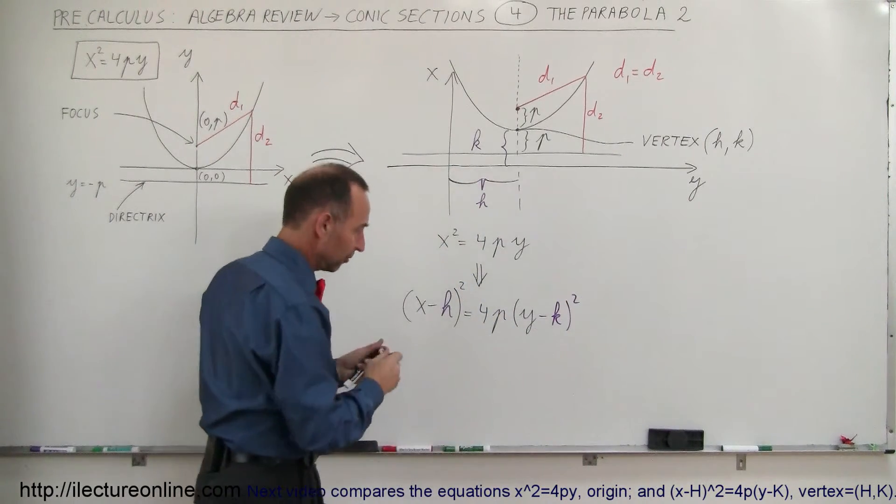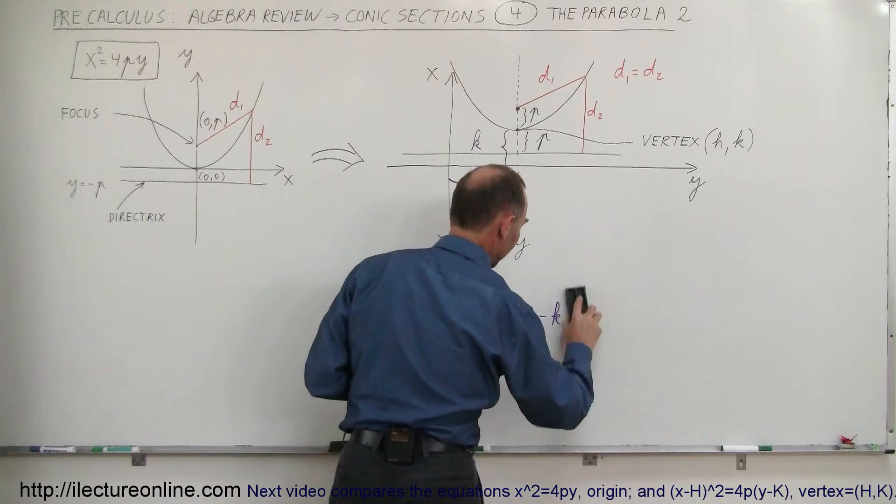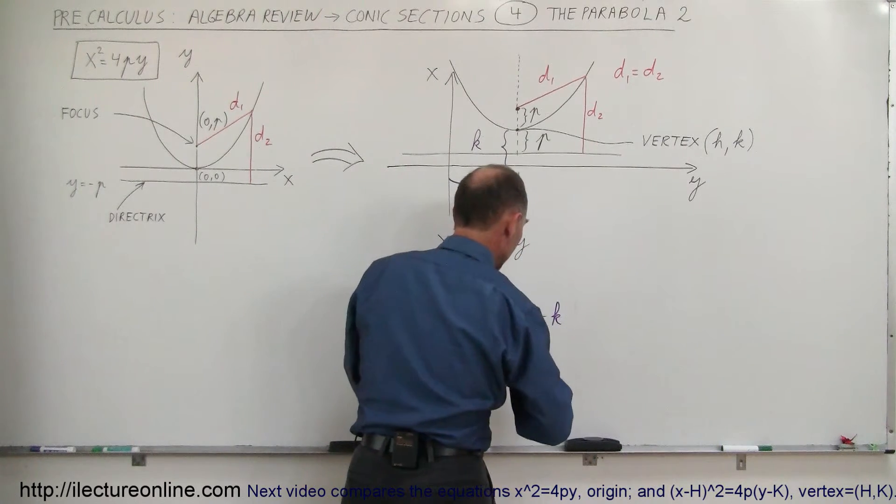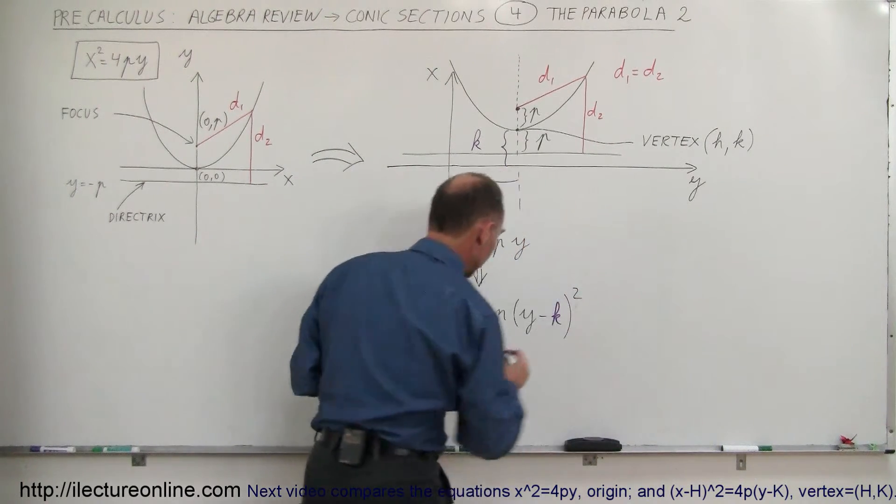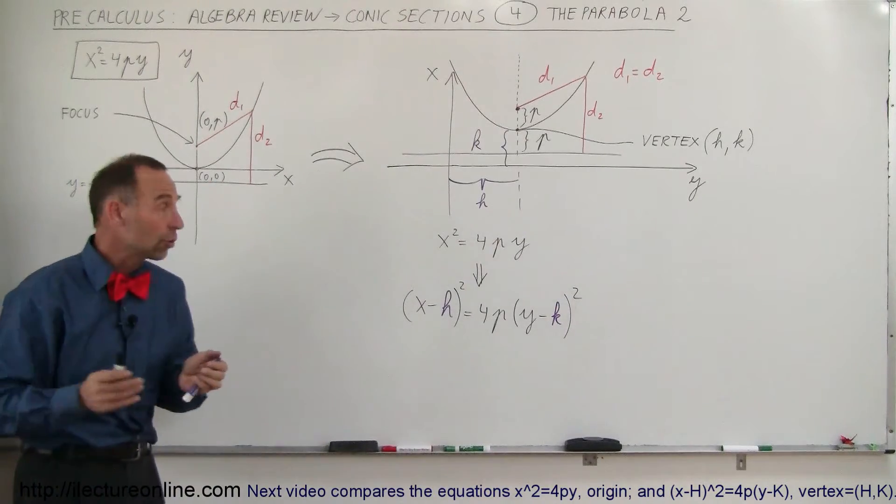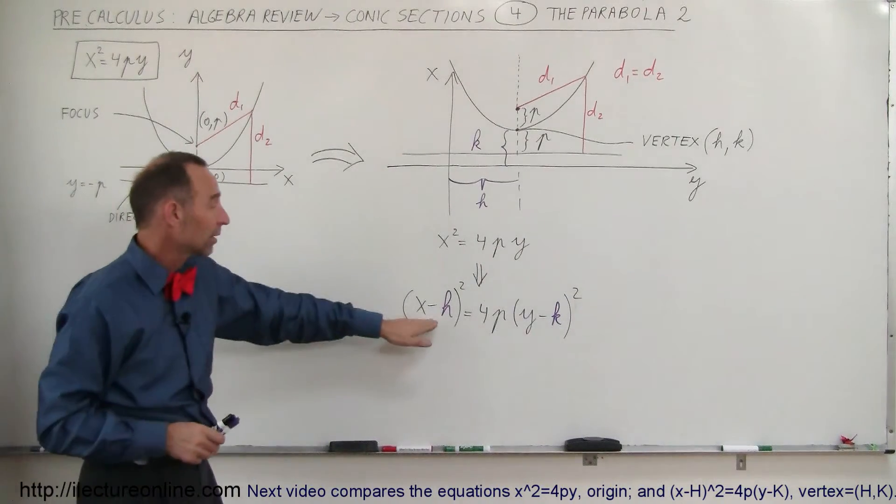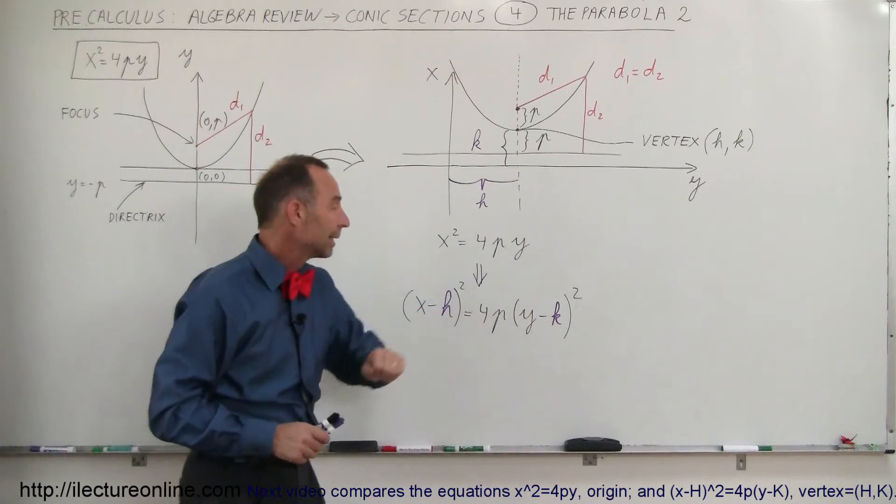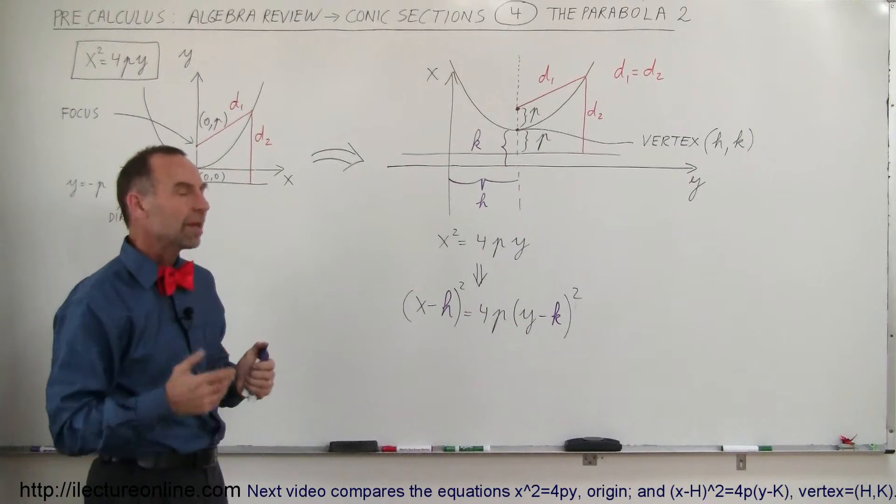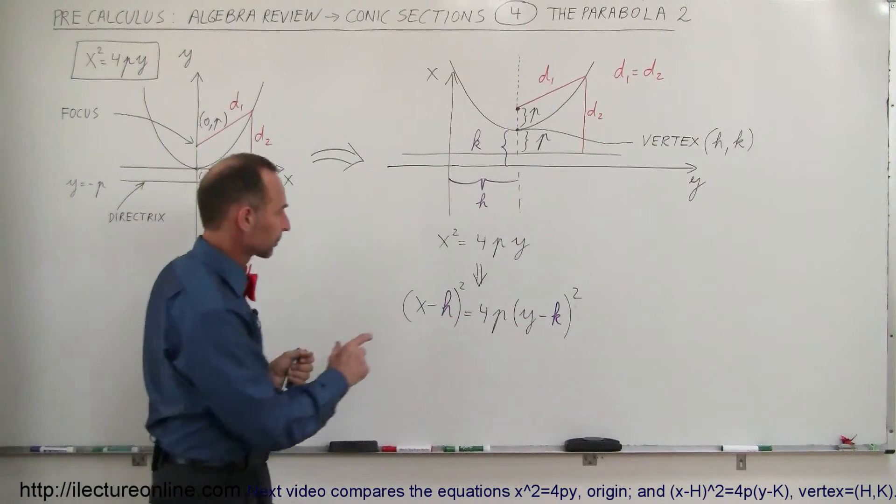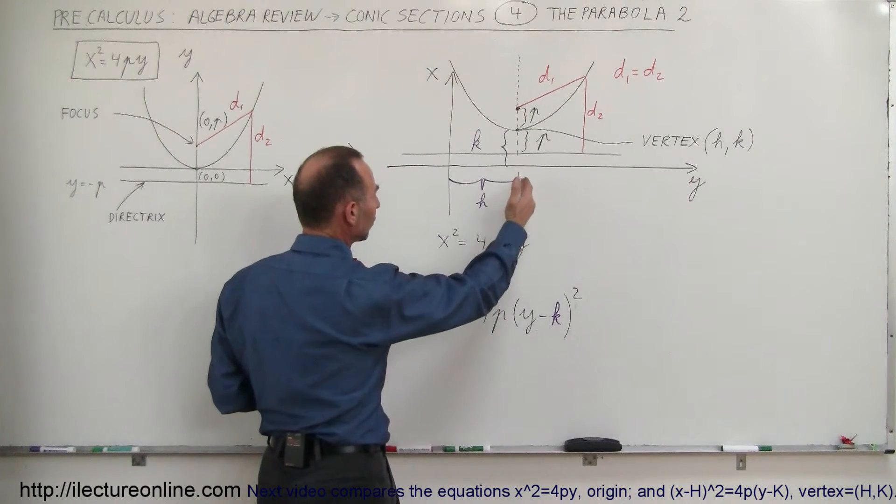And I should have probably put that in black so that we just only have the new constants in color. So that's how we change the equation. The only thing we did was subtract h from x and k from y. Does that make sense? Let's see here.